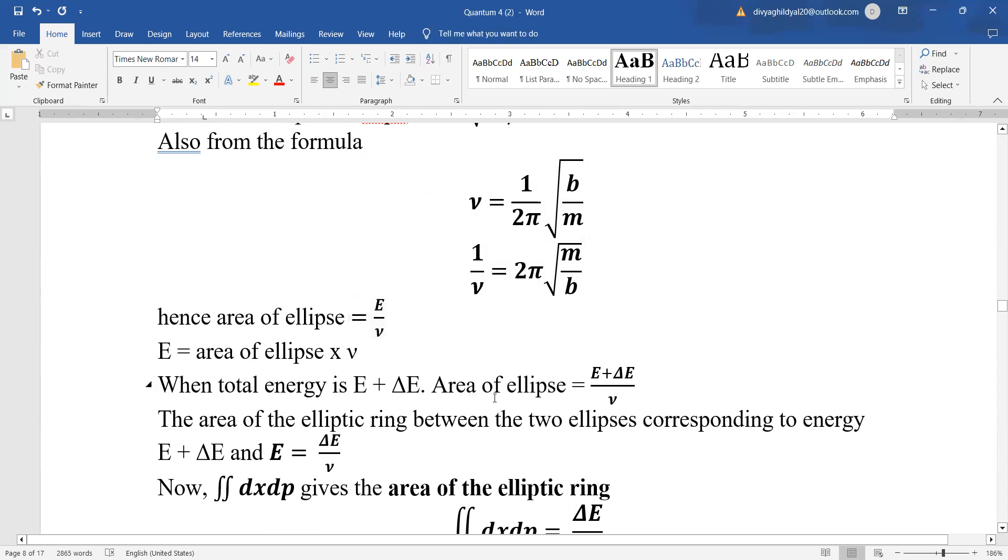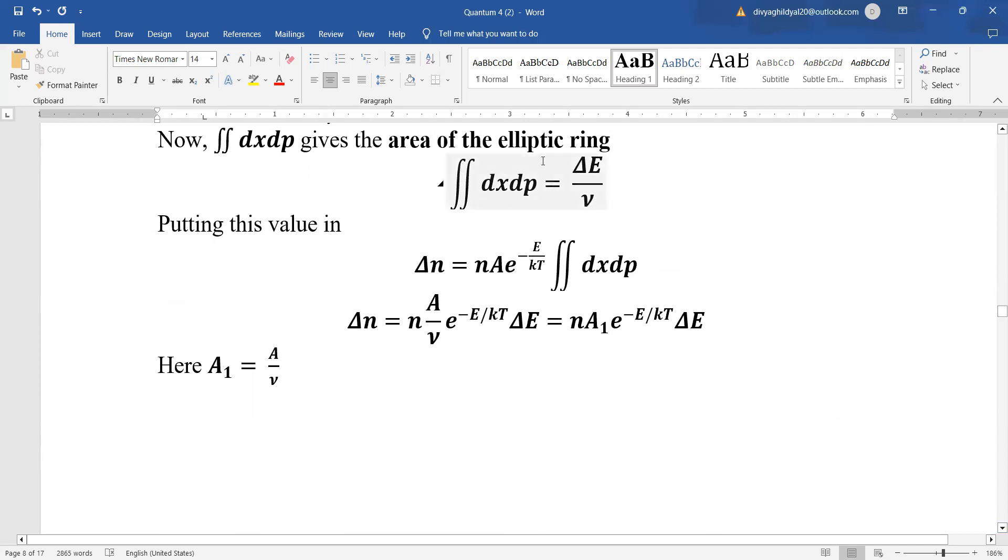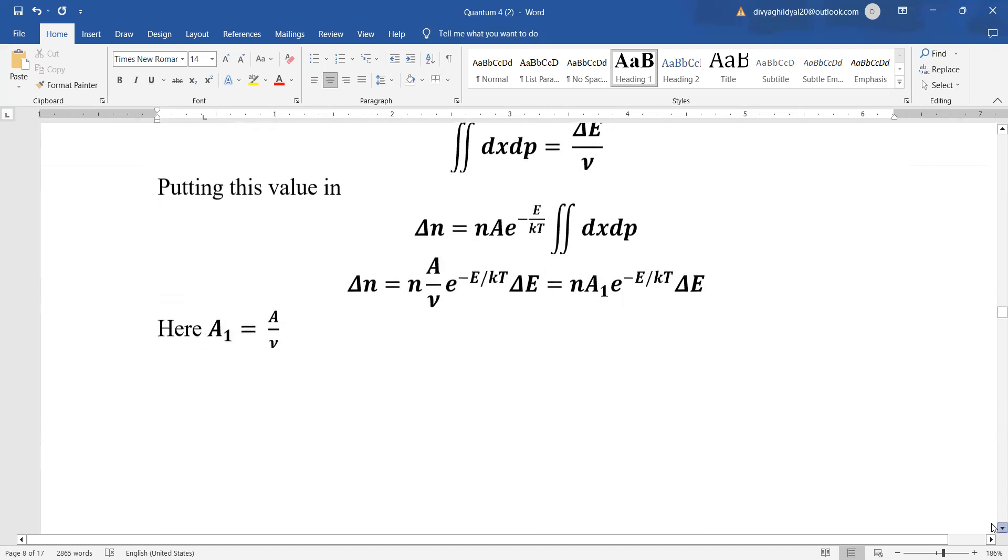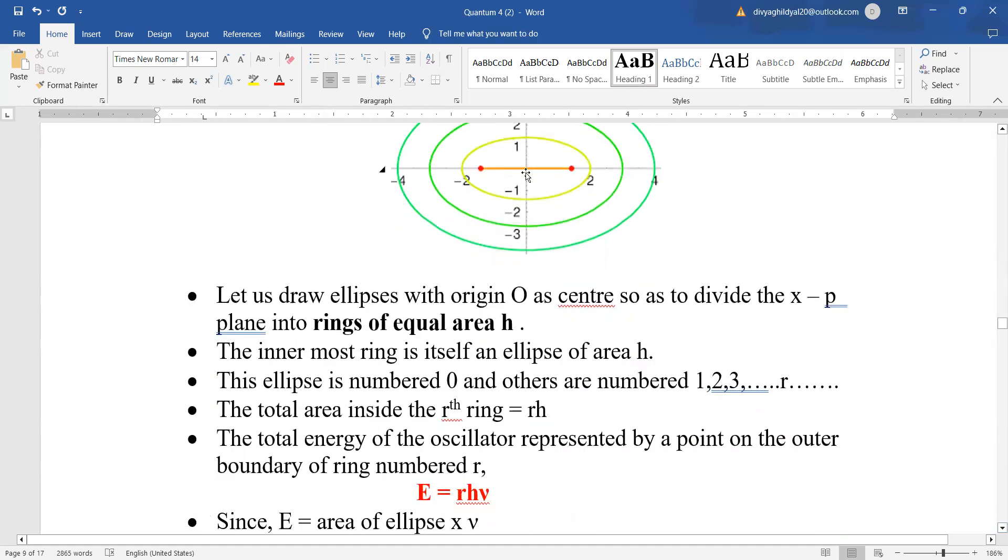So, total energy is e plus del e. Area of ellipse becomes e plus del e upon μ. Area of elliptic ring between the two energy ellipses gives us the area corresponding to the elliptic ring is integral across dx dp equal to del e by μ. We put this value of dx dp equal to del e by μ in this formula, the total del n and we get this expression. A1 can be written as a upon μ and putting this value of a1 here in this expression.